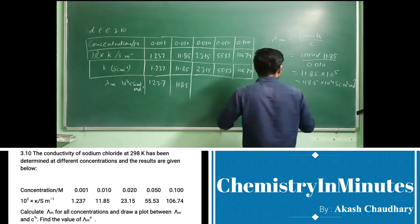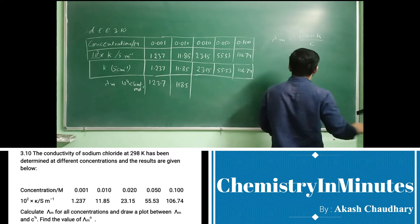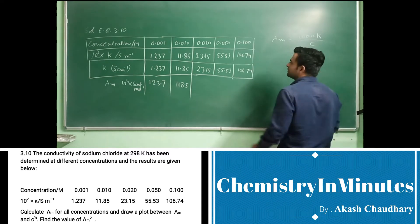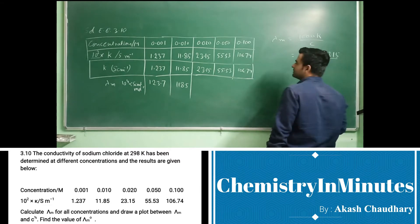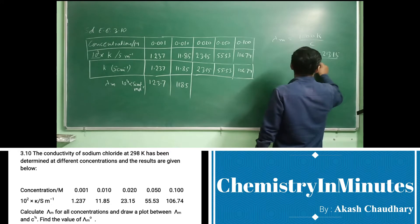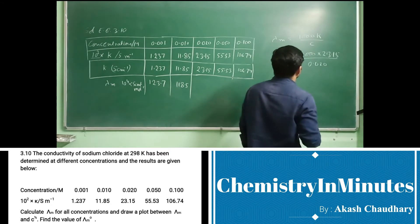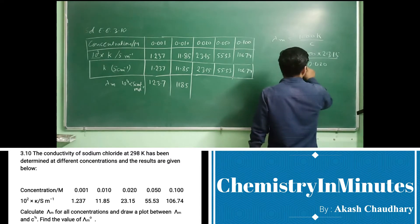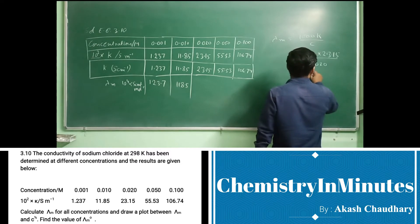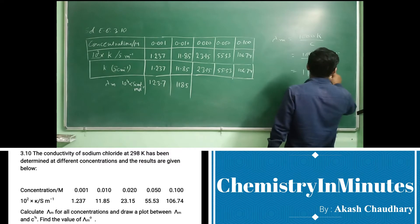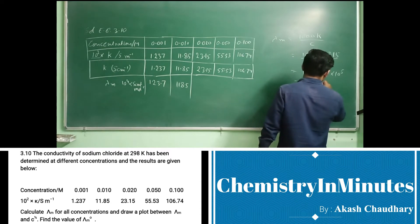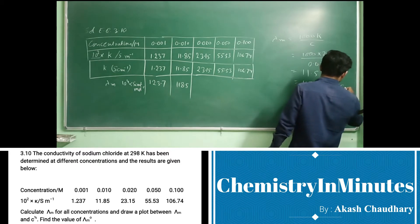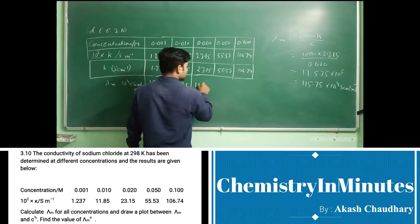For the third value, lambda m equals 1000 times k, where k is 23.15, divided by c which is 0.020. This gives 11.575 times 10 to the power 5, or 115.75 times 10 to the power 4 siemens centimeter squared per mole. So we write 115.75 in this column.